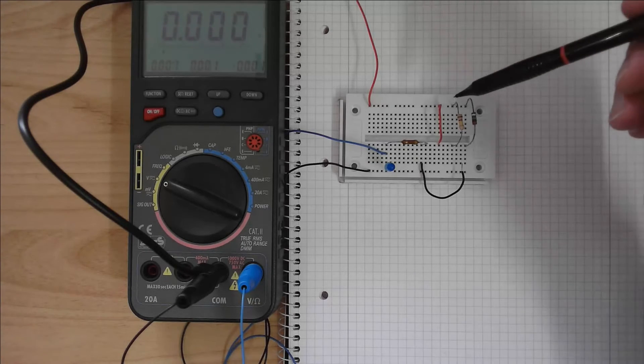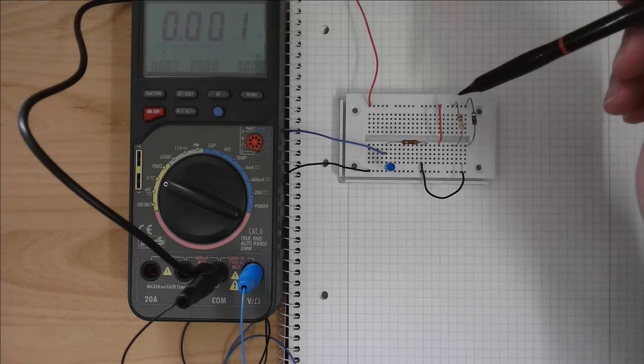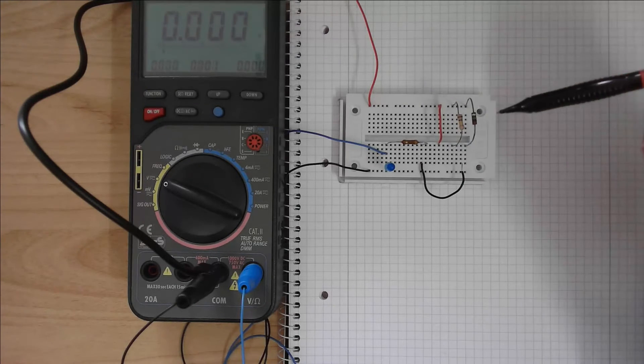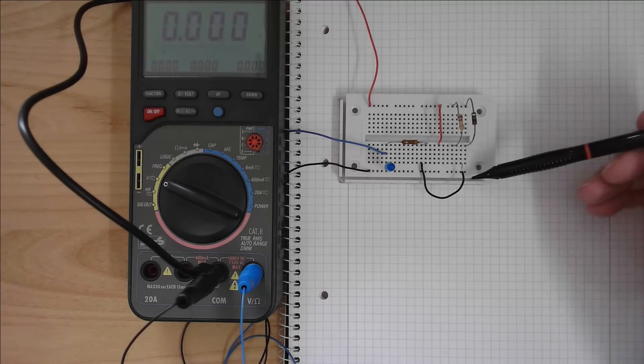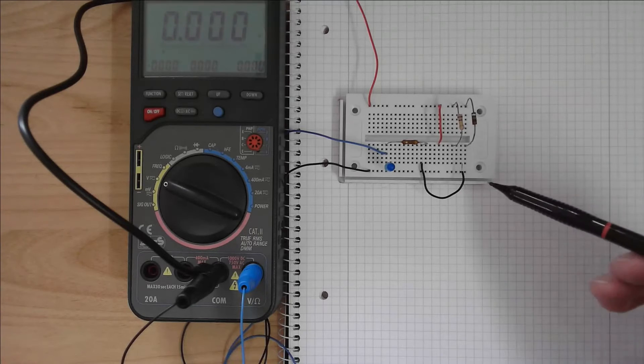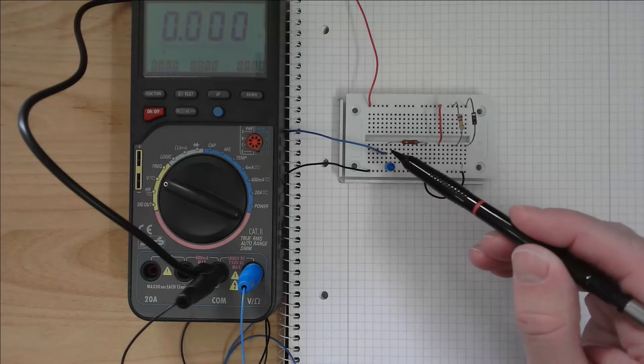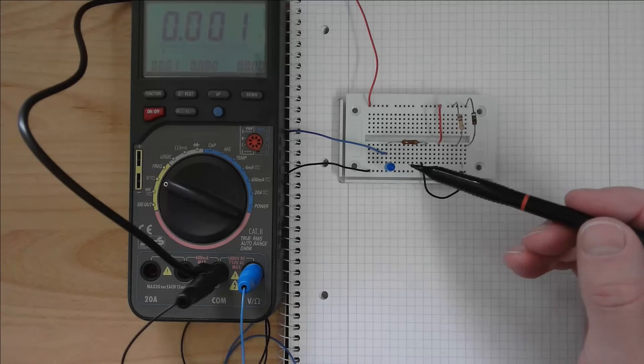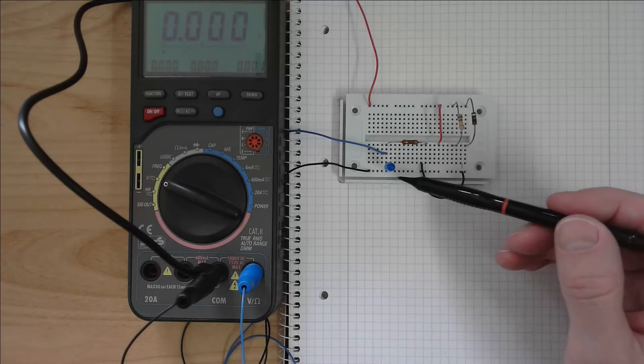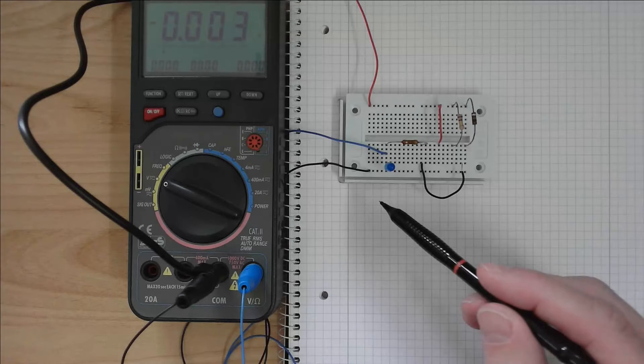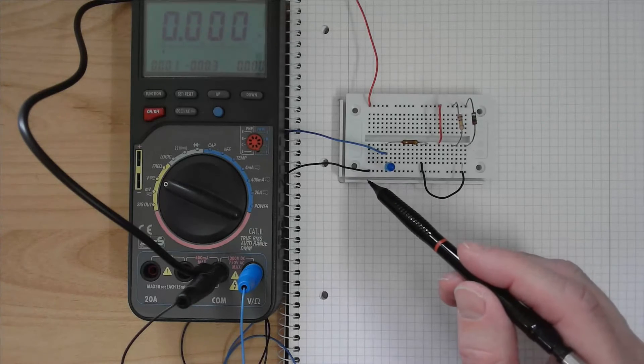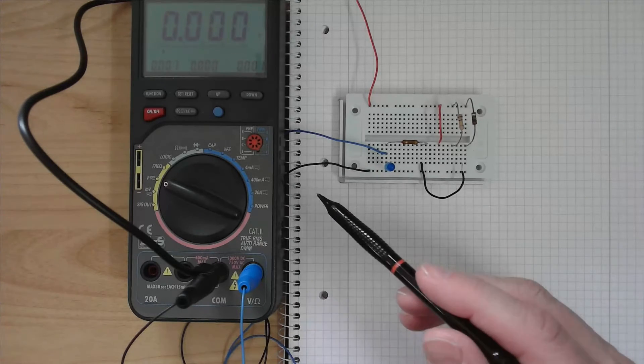From this bar via the red line or the 100 kiloohm resistor or the 1 megaohm resistor to the 3 bars. Via the black line and via the 470 ohm resistor to the LED and from the negative side of the LED via this bar and the black line back to the power supply.